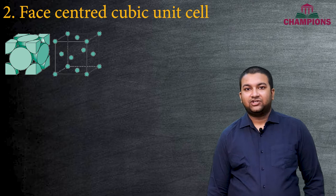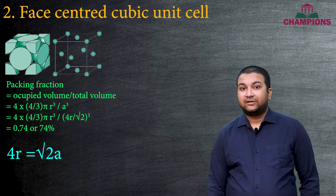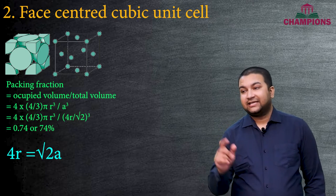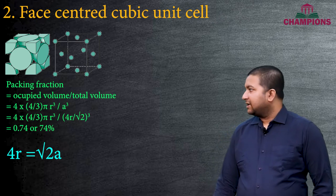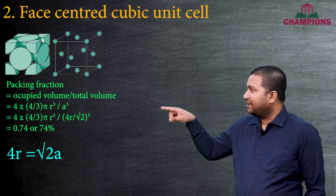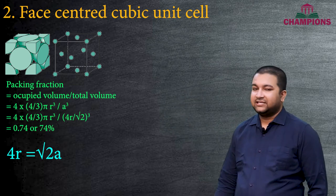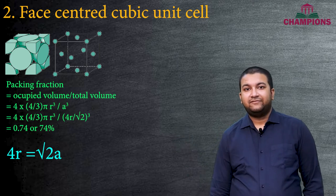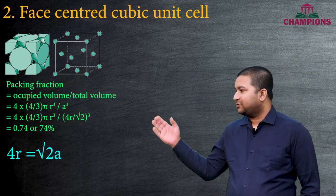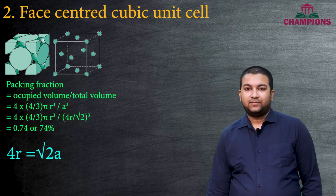The packing fraction for FCC is calculated as: 4 × (4/3)πr³ divided by a³. To express a in terms of r, focus on one face: the face diagonal has length √2·a. Along this diagonal, four radii are in contact, so √2·a = 4r, giving a = 4r/√2 = 2√2·r. Substituting this value of a gives a packing fraction of approximately 74%.